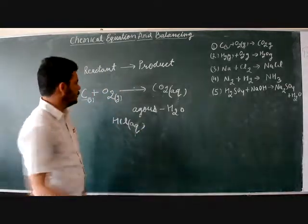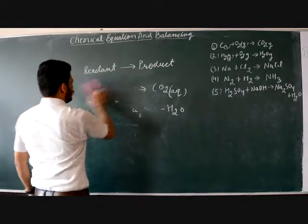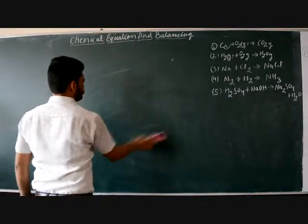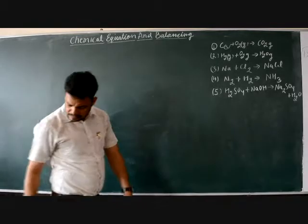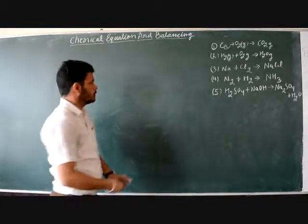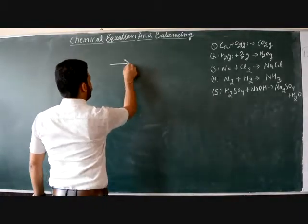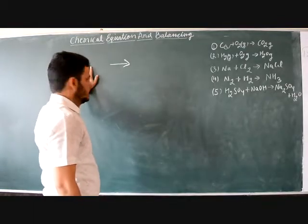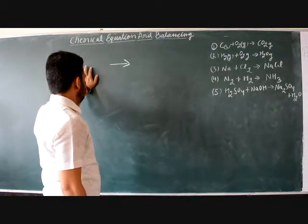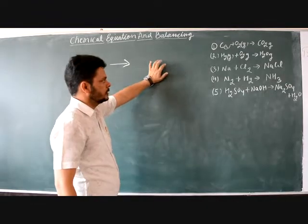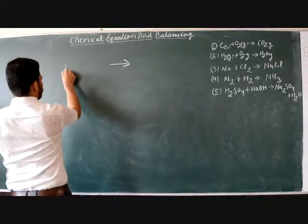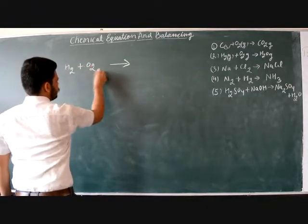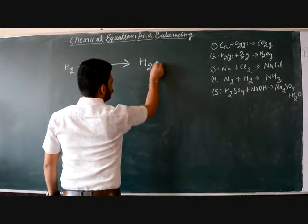Now let's talk about balancing chemical equations. Balancing means the number of atoms on the reactant side must be equal to the number of atoms on the product side. Let's take the example of H₂ + O₂ → H₂O.